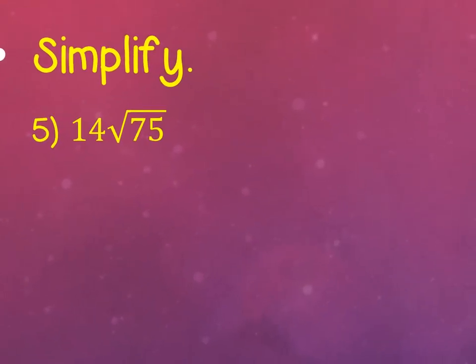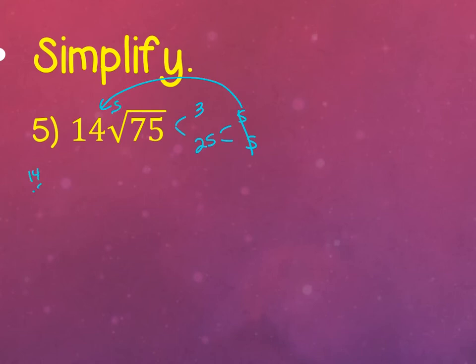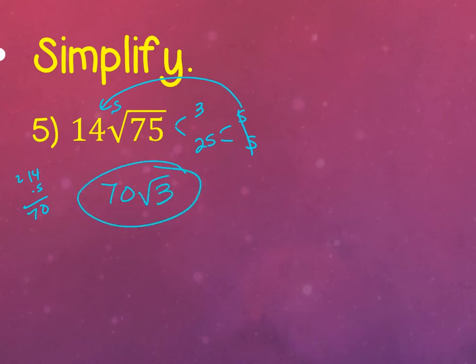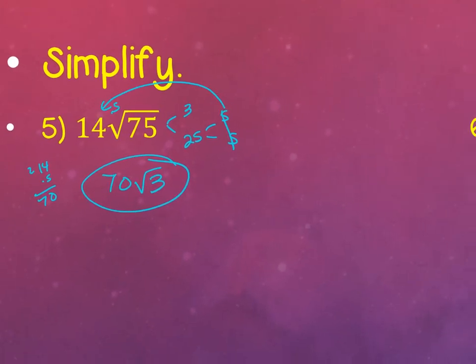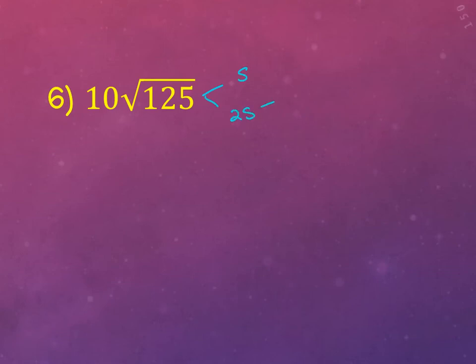Number 5: 14 square root of 75. 75 breaks down to 3 and 25, which is 5 and 5. That means one 5 goes to the outside with the 14: 14 times 5 is 70 square root 3. Number 6: 10 times the square root of 125. 125 is 5 and 25, which is 5 and 5. Now there are three of the same number, but I can only bring these out two at a time because it's a square root, not a cube root. So I bring out two 5s with the 10. One 5 stays underneath, and I have 50 square root 5.